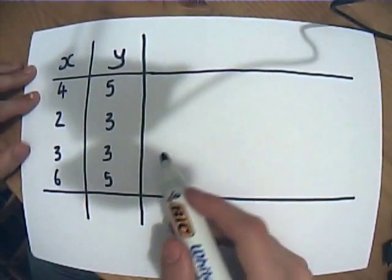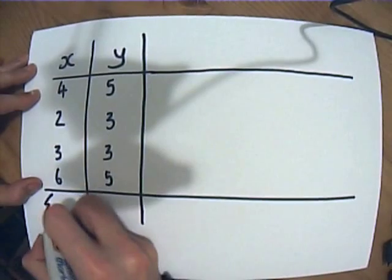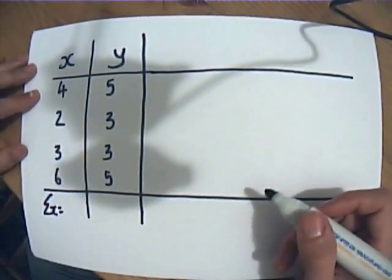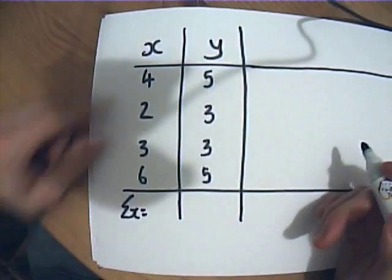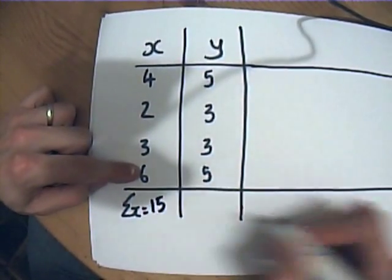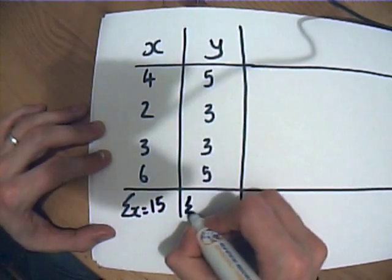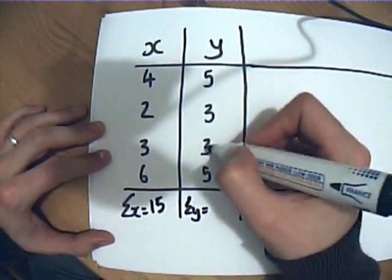First thing we're going to do is I've got my x and y's. Let's work out what the sum of x is, so let's find the total of my x values. Here we go, right, so 4 add 2 is 6, 9, 15.